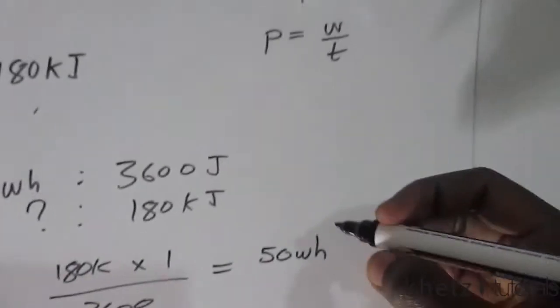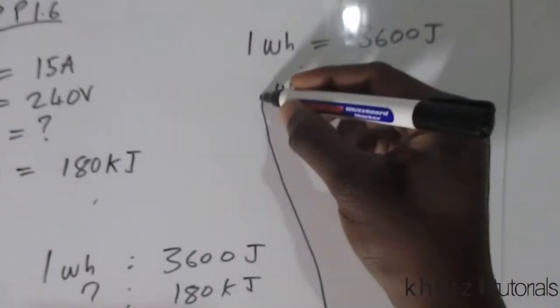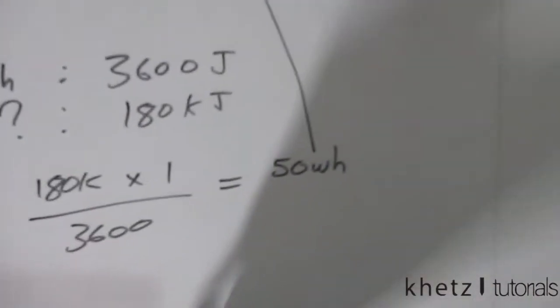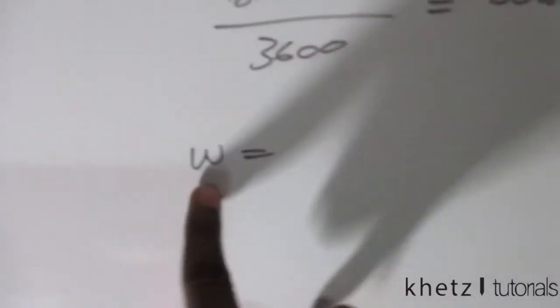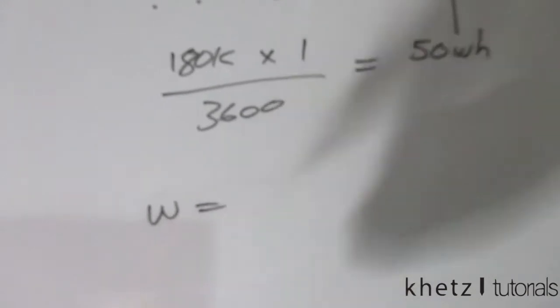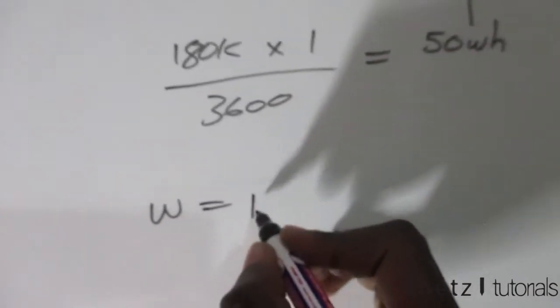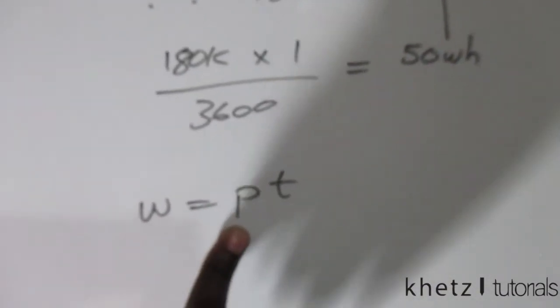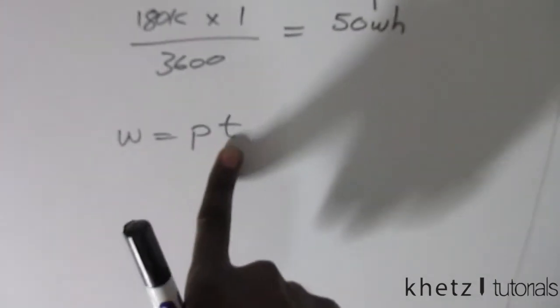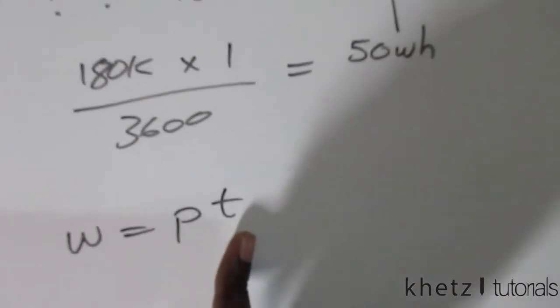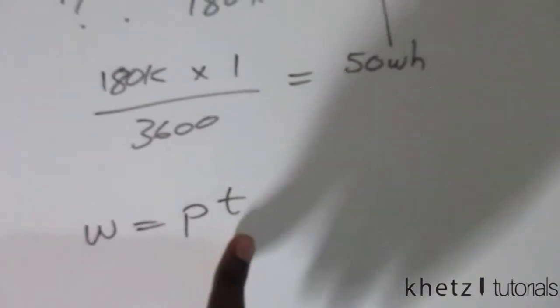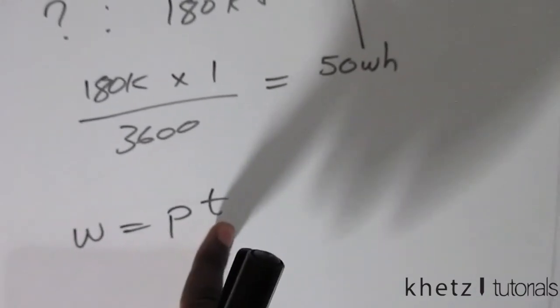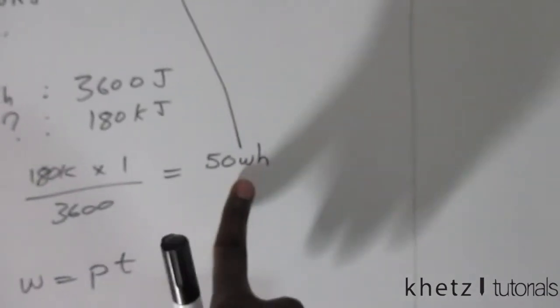Now taking these 50 watt hours into this formula. So energy, this is energy in watt hours. The unit of power is watts, the unit for time is seconds. To find the watt hours you can simply leave the watts as they are and convert the time into hours to get watt hours.